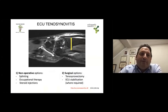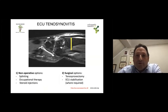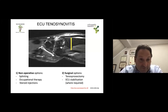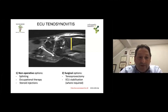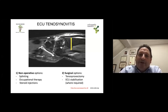Another cause of ulnar-sided wrist pain is ECU tenosynovitis — quite common. It is not always associated with instability and may be caused by overuse of the wrist. You may see some swelling over the ECU, but sometimes the swelling is very mild. You would definitely have tenderness on palpation over the tendon, especially over the ulnar head and the distal portion of the tendon. You can refer the patient for splinting or occupational therapy with activity modification, steroid injections, and consider surgical options if non-operative treatment fails — tenosynovectomy, or ECU stabilization if there is instability.